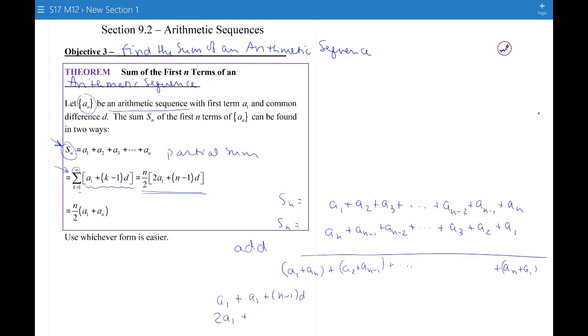So this is 2 a sub 1 plus n minus 1 d. Oh look, here's 2 a sub 1 plus n minus 1 d. Every pair, every pair is adding up to that same number. So then all I need to know is how many pairs.